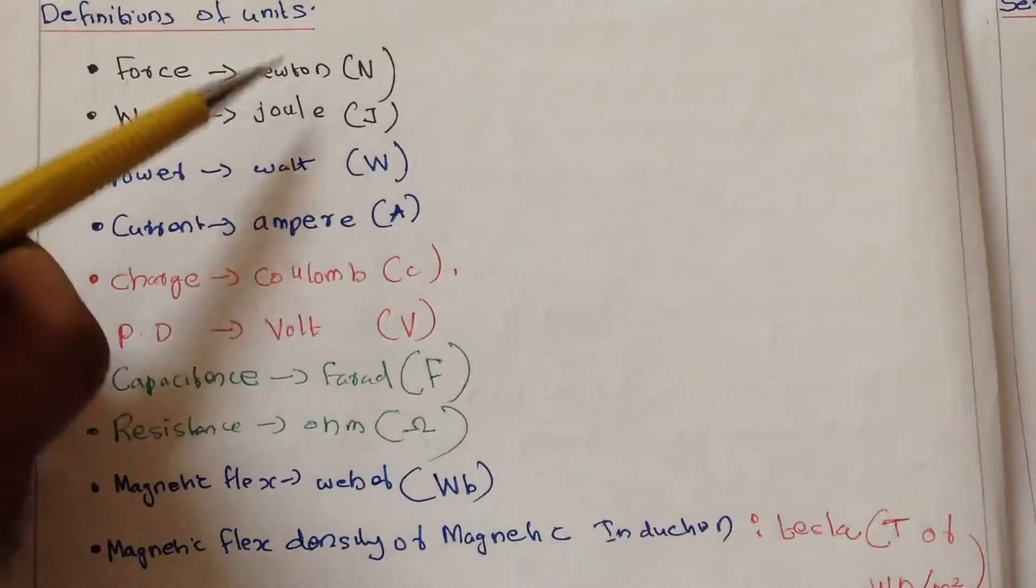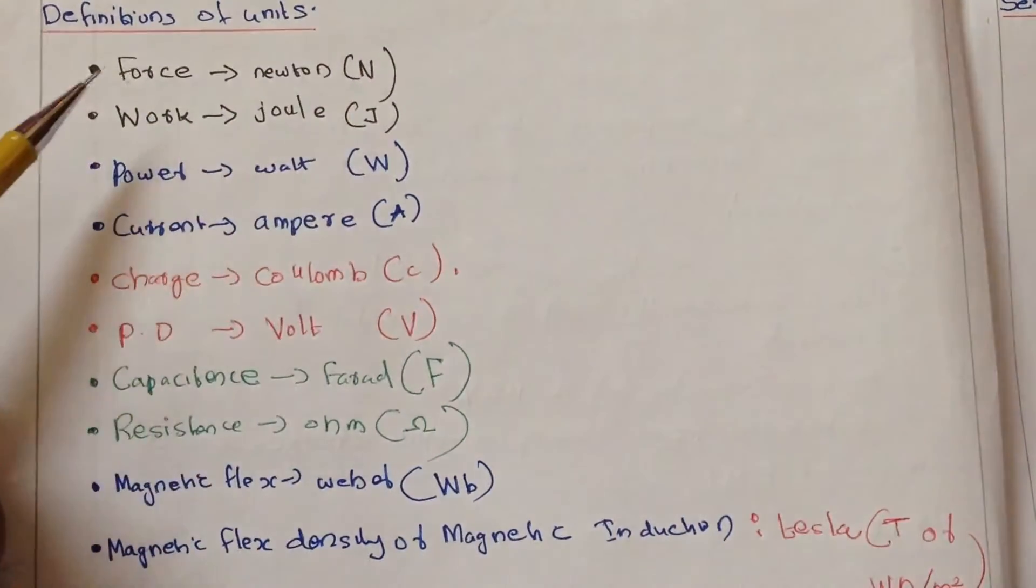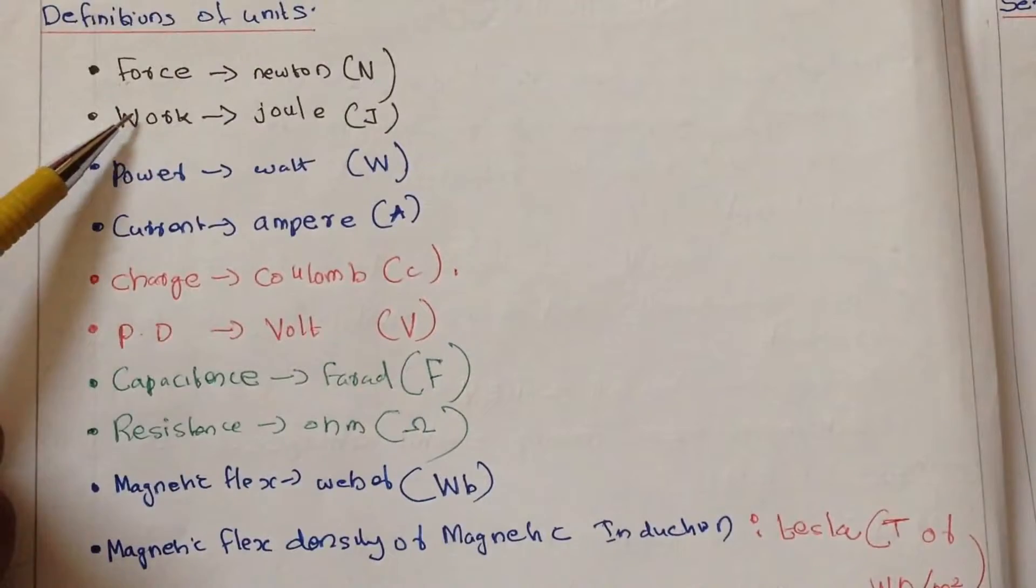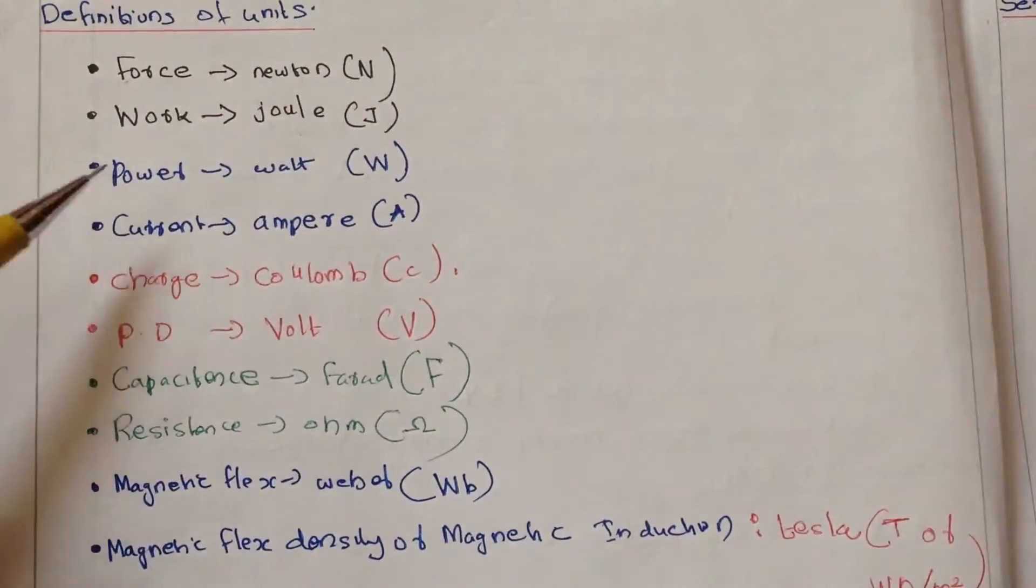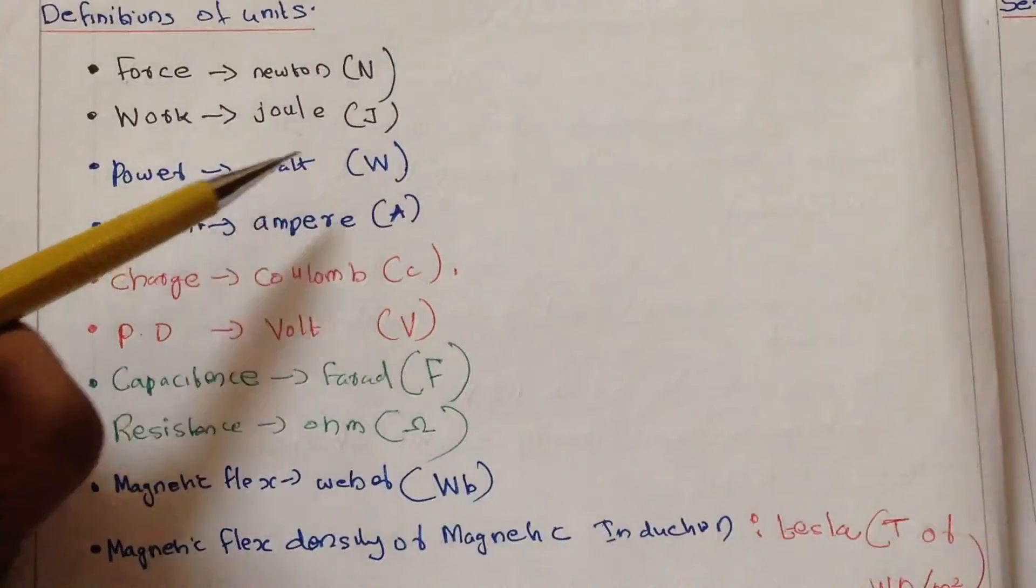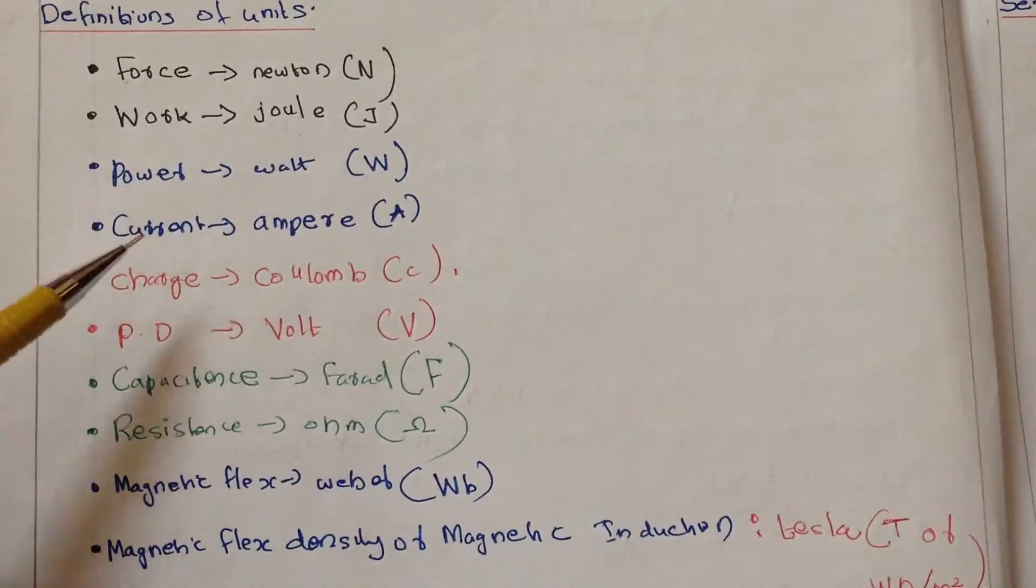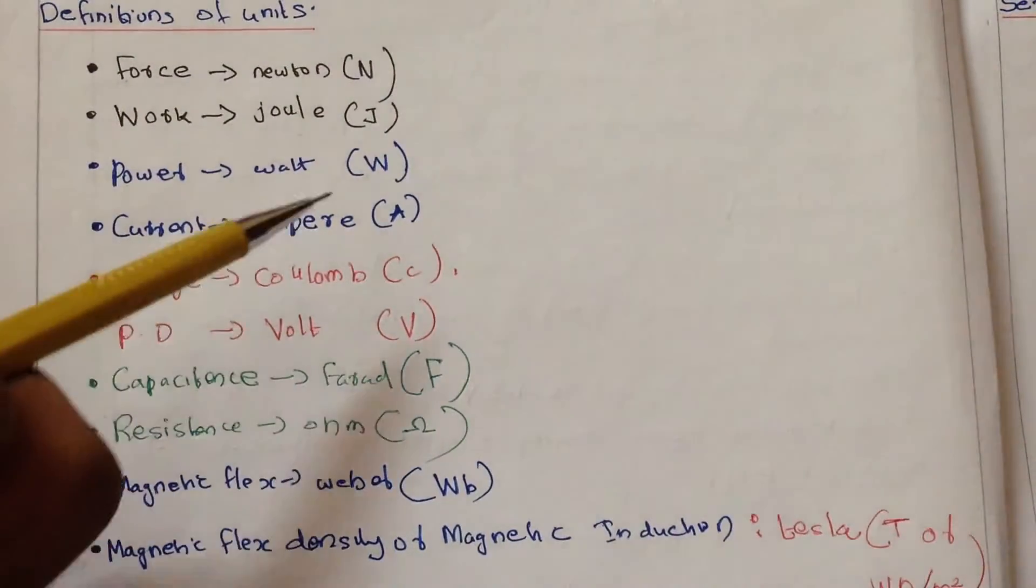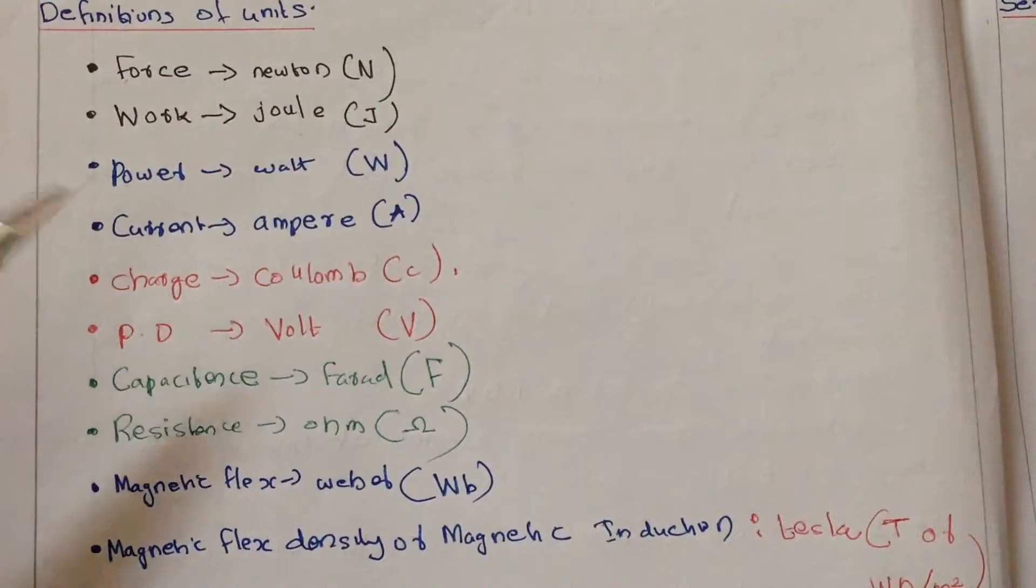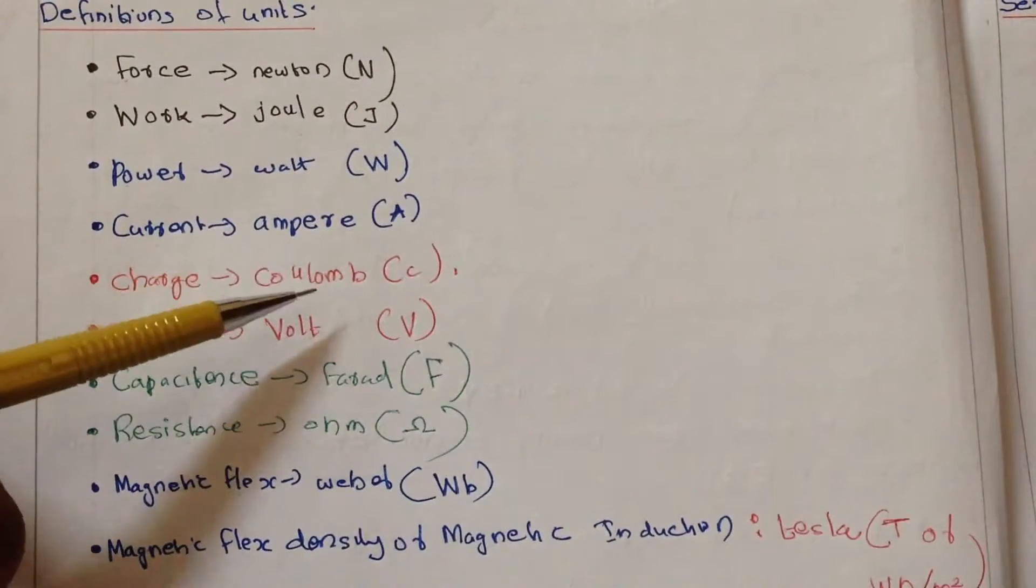The unit of force is Newton, denoted by N. Work is Joule (J). The unit of power is Watt, expressed as W. The unit of current is Ampere (A), and the unit of charge is Coulomb, denoted by C.